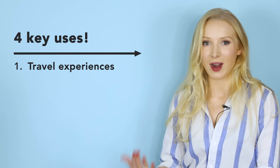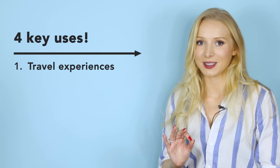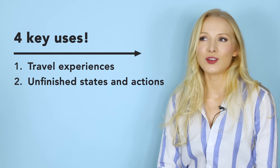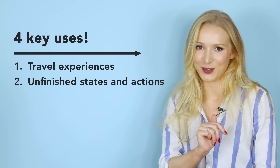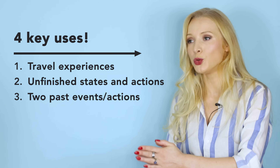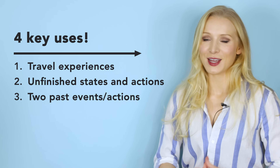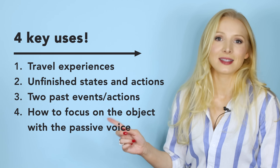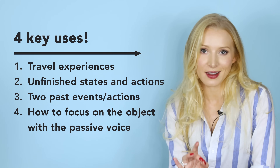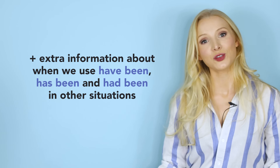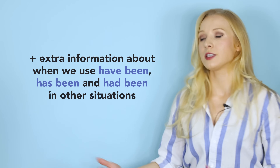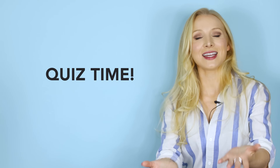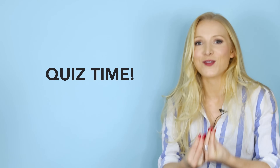We're going to discuss how to talk about travel experiences — that's a source of some really common mistakes. We'll also discuss how to describe unfinished states and actions, with an additional focus on 'for' and 'since.' I'm going to show you how to talk about two past events or actions, and then finally we'll focus on how to focus on the object of a sentence with the passive voice. At the end of the video I'll give you extra information and we'll end with a short quiz.